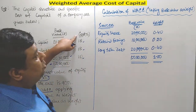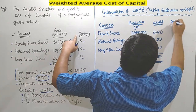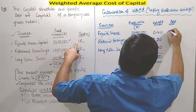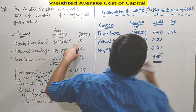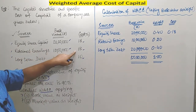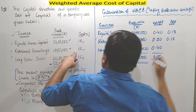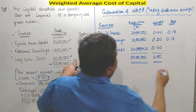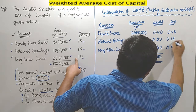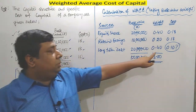Finally we plot the cost column. For equity share capital the cost is 18%, that is 0.18. For retained earnings it is also 0.18. For long-term debt it is 10%, that is 0.10. But there is a question about plotting 0.10 directly.